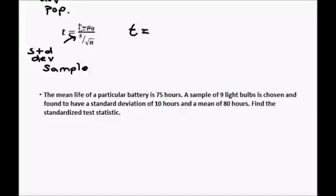So my t score is going to be x bar, that is the sample mean, that is given in the question as 80, minus mu of 0, that is the population mean, and the population mean here is 75.